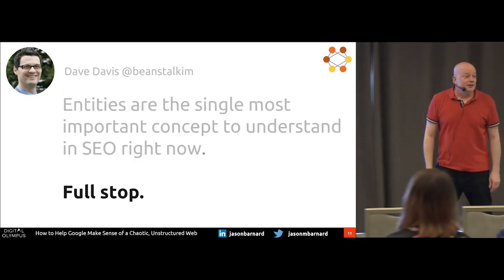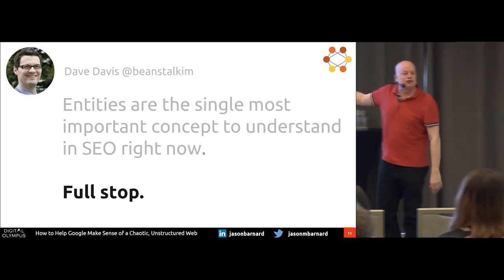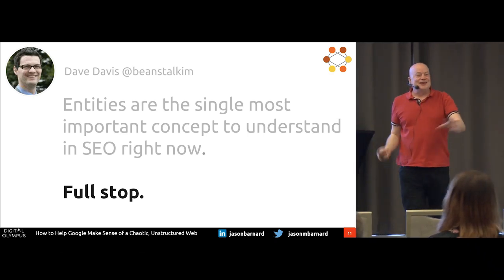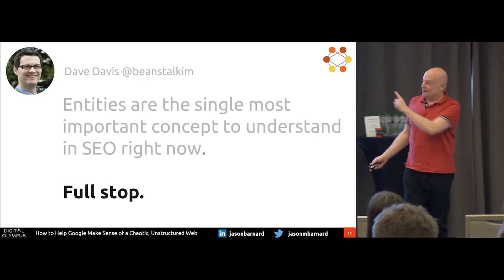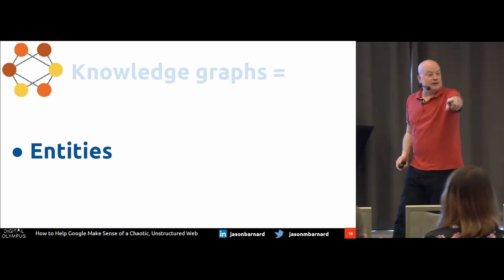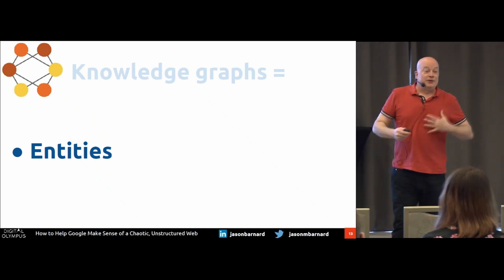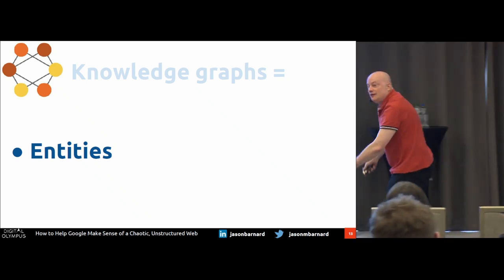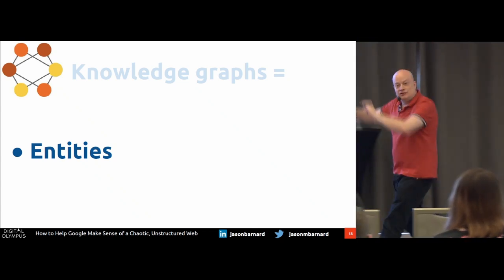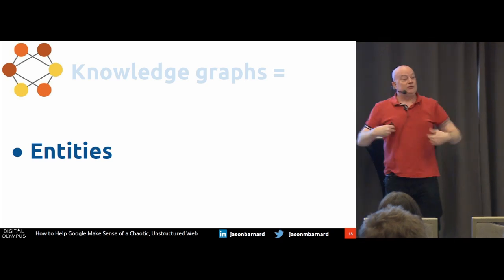Brilliant. Full stop. That's it — you can forget the rest. Well, not quite, but this is your top priority from today, other than building your own brand. Knowledge graphs, entities. You, sir, with the beard — me. My relationship to the town I was born in, my relationship to the town I live in, my relationship to Digital Olympus. I am Jason Barnard. Speaks at Digital Olympus — entity: me. Digital Olympus: another entity. Relationship: speaks at.